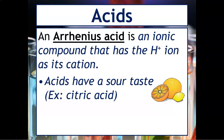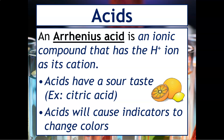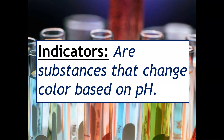Acids typically have a sour taste — for example, citric acid. Acids will often cause indicators to change colors. Indicators are substances that will change color based on the pH of a solution, and we'll talk more about pH a little bit later on in this unit.